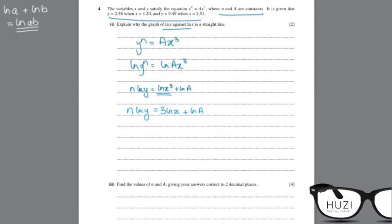Okay, now, if you notice, if you take n on the other side, so this becomes ln y equals 3 upon n ln x plus ln a upon n.